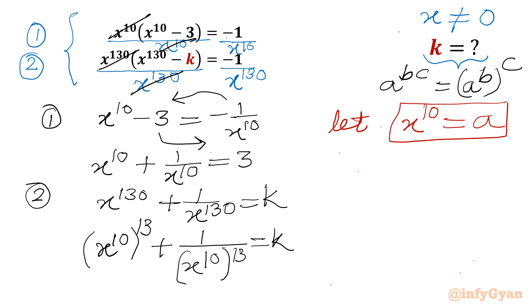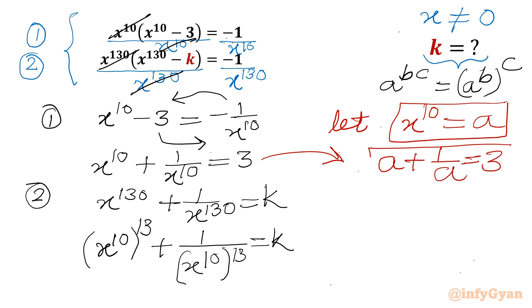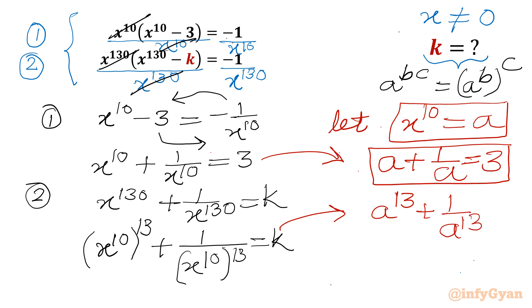So I can write the first equation as a plus 1 over a equal to 3. And the second equation becomes a^13 plus 1 over a^13 equal to k. So ultimately we have to find out a^13 plus 1 over a^13.